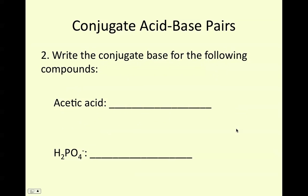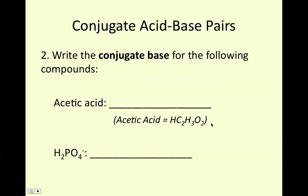Alright, and then just something quickly to keep in mind for what we're going to do tomorrow. We can write the conjugate base. If we look at acetic acid, its conjugate base would be one less proton, so C2H3O2-.